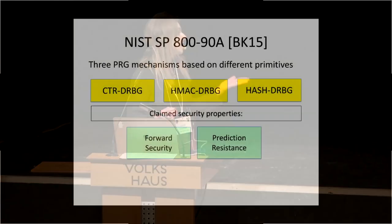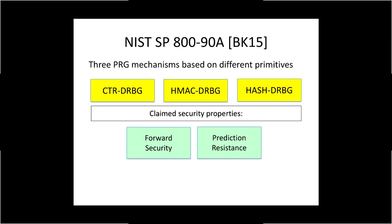In terms of the security properties of these generators, of course we need to make sure the output is pseudo-random. But in practice, we really want stronger properties from PRGs which guarantee that in the event an attacker can compromise a state, we preserve as much security as possible. This is captured by the stronger security notions of forward security — or backtracking resistance in the NIST parlance — and prediction resistance. The standard claims all the constructions possess these stronger security properties.